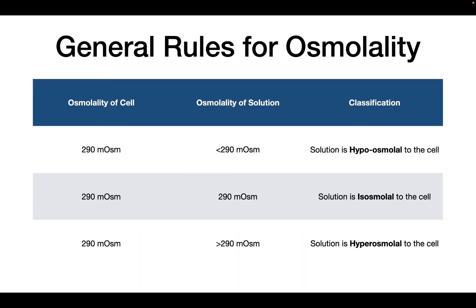The general rules for osmolality are as follows. The osmolality of the cell is 290 milliosmols. If the solution is less than 290, it is hypoosmolal. If it is equal to 290, it is isoosmolal. And if it is greater than 290, it is hyperosmolal.